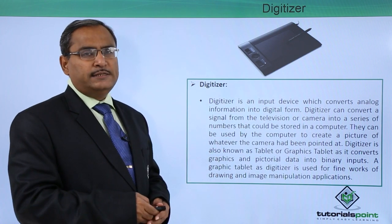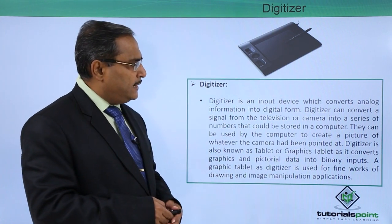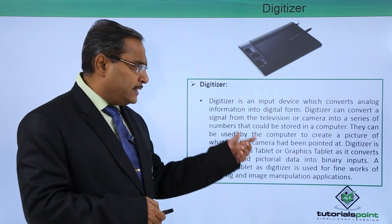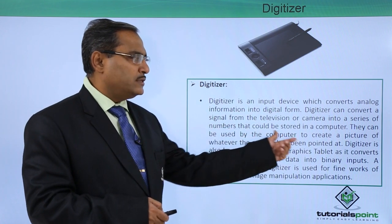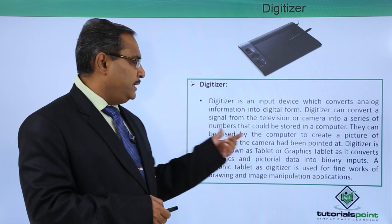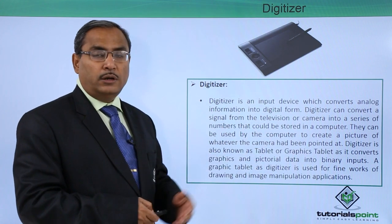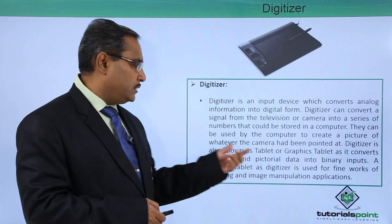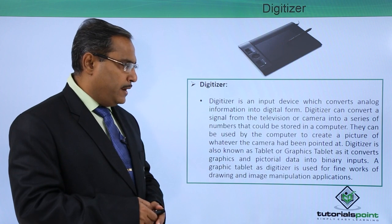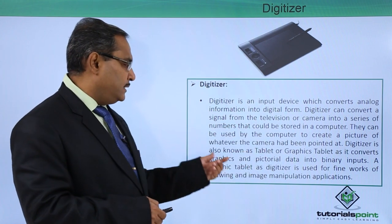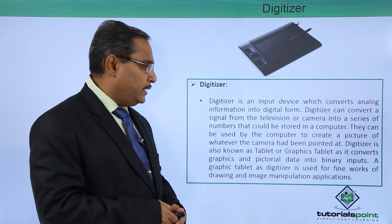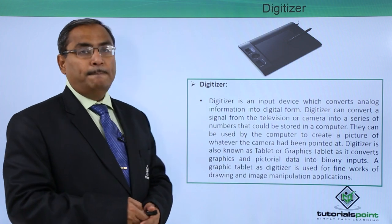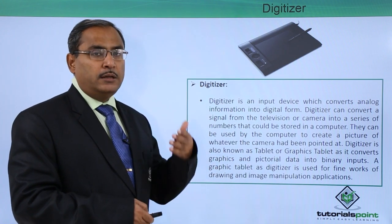Next we have the digitizer. Digitizer is an input device which converts analog information into digital form. Digitizer can convert a signal from the television or camera into a series of numbers that could be stored in the computer. They can be used by the computer to create a picture of whatever the camera had been pointed at. Digitizer is also known as the tablet or graphics tablet, as it converts graphics and pictorial data into binary inputs which the computer can comprehend.